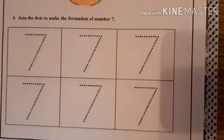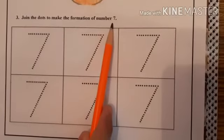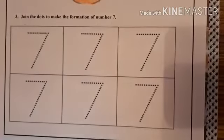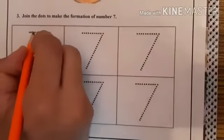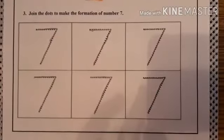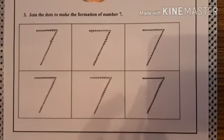The third question says, join the dots to make the formation of number 7. For this, you have to draw a sleeping line and a slanting line. Similarly, you can trace all the numbers like this.